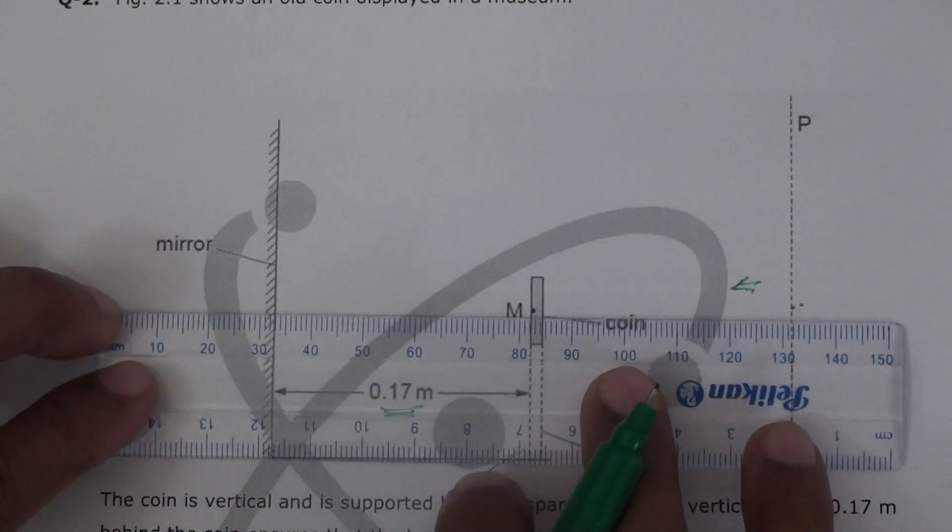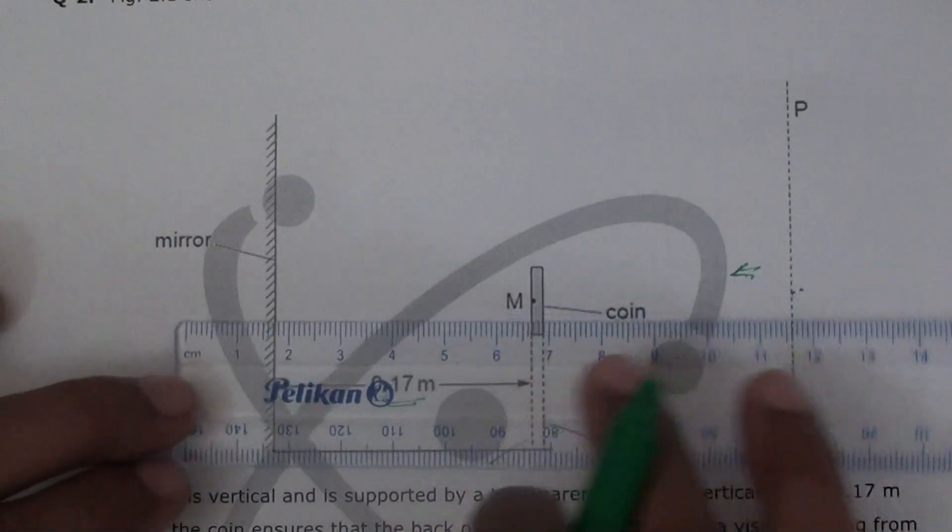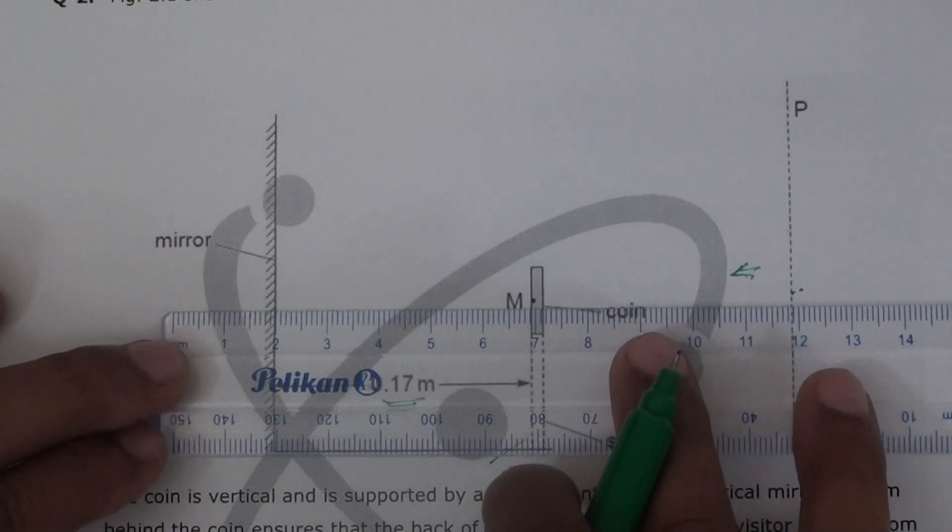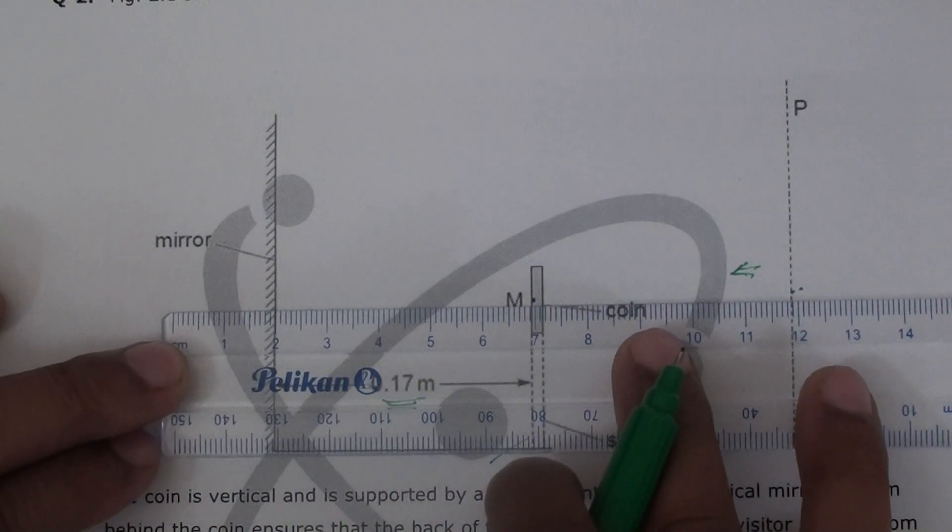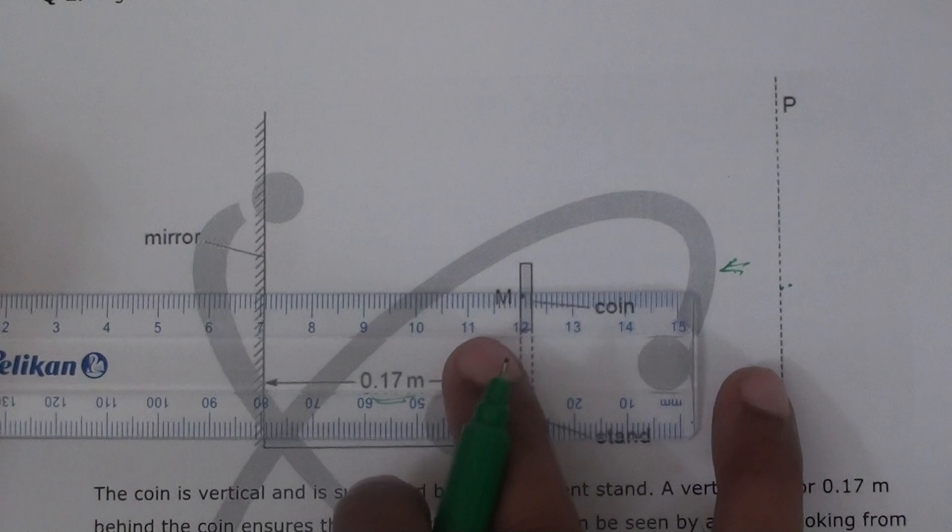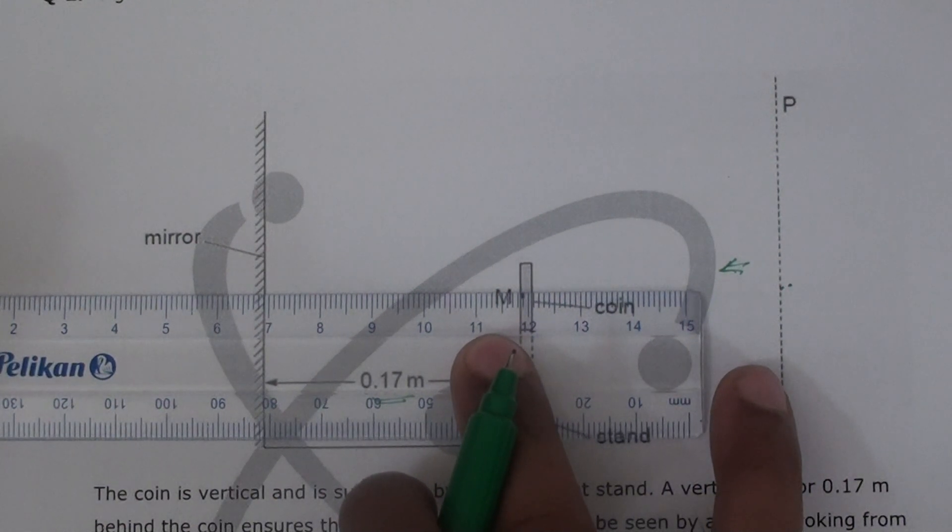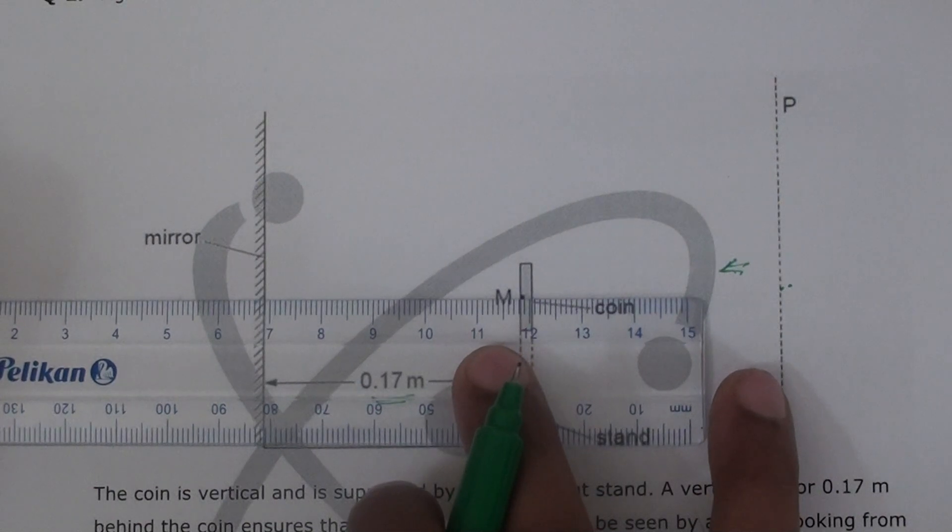So if I take a ruler—that's approximately 4.9 centimeters, right? So 4.9 centimeters this way.